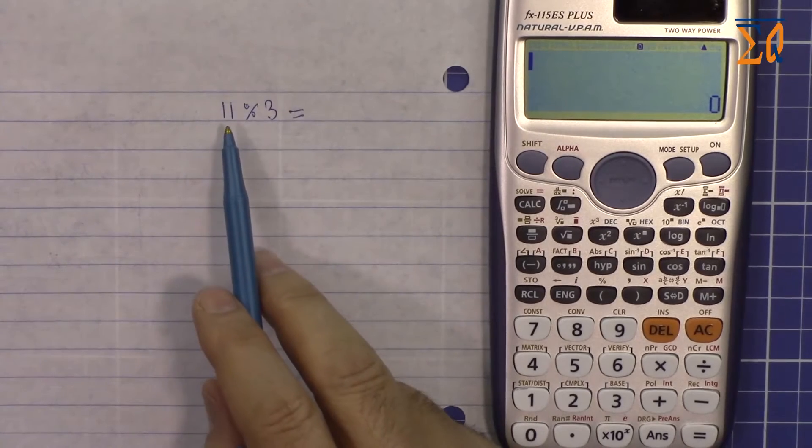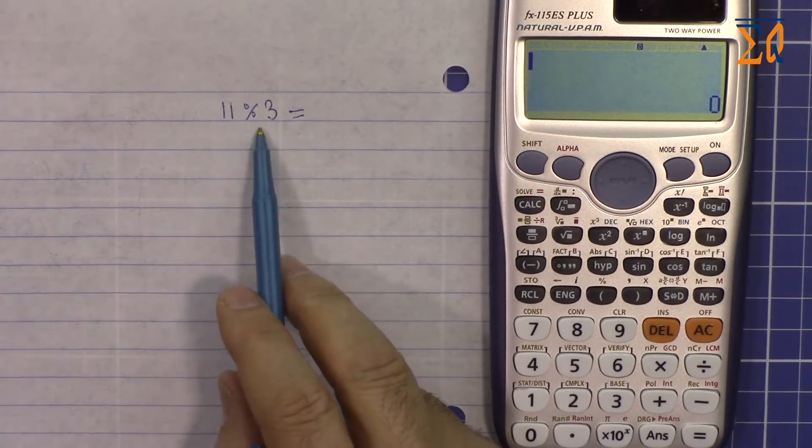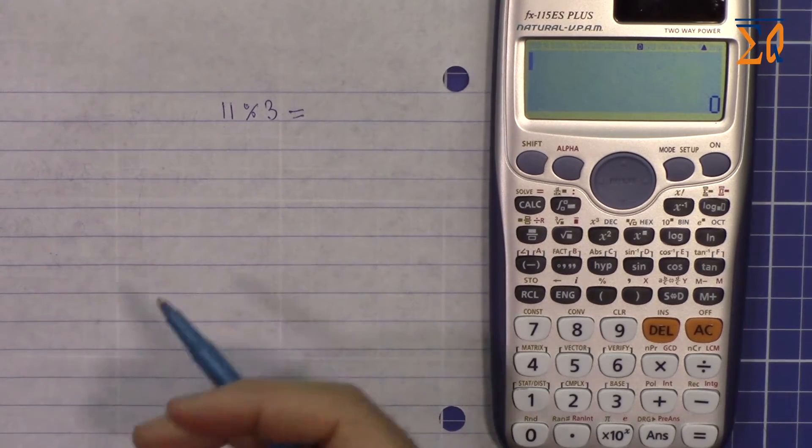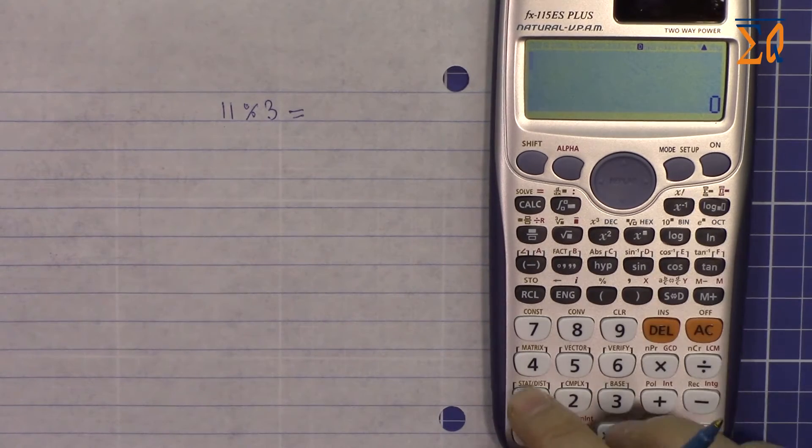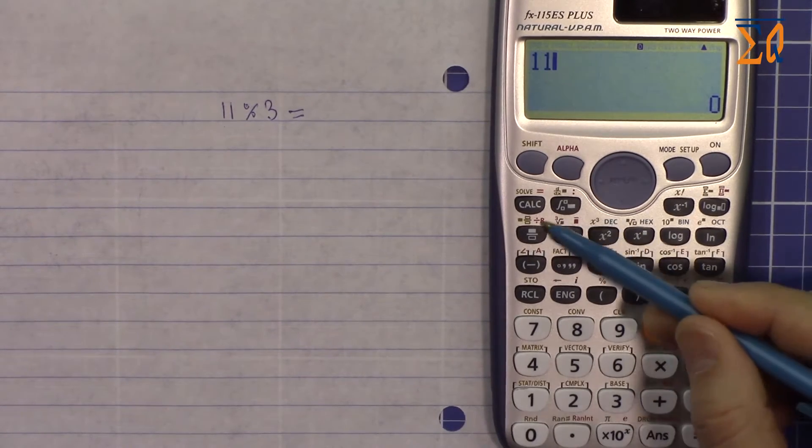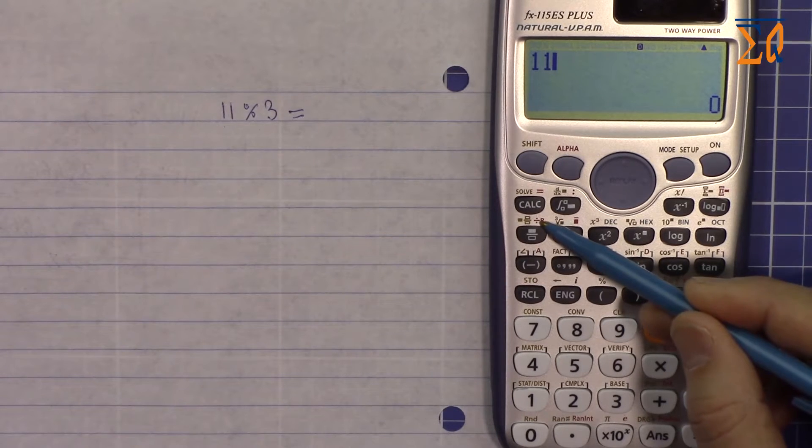When we say modulus 3, it means 11 divided by 3 as a whole number and then give me the remainder. So how we do it in this calculator: we press 11, for modulus with this red division with R that's the remainder.